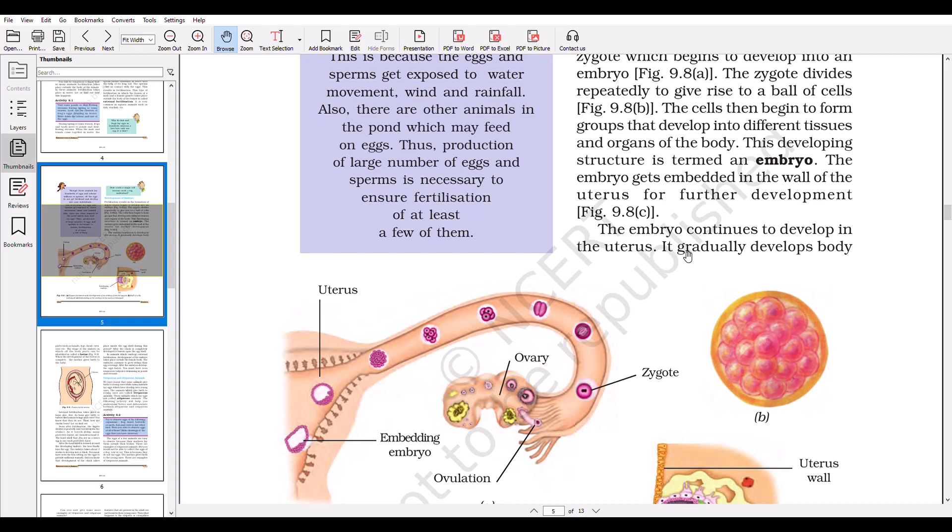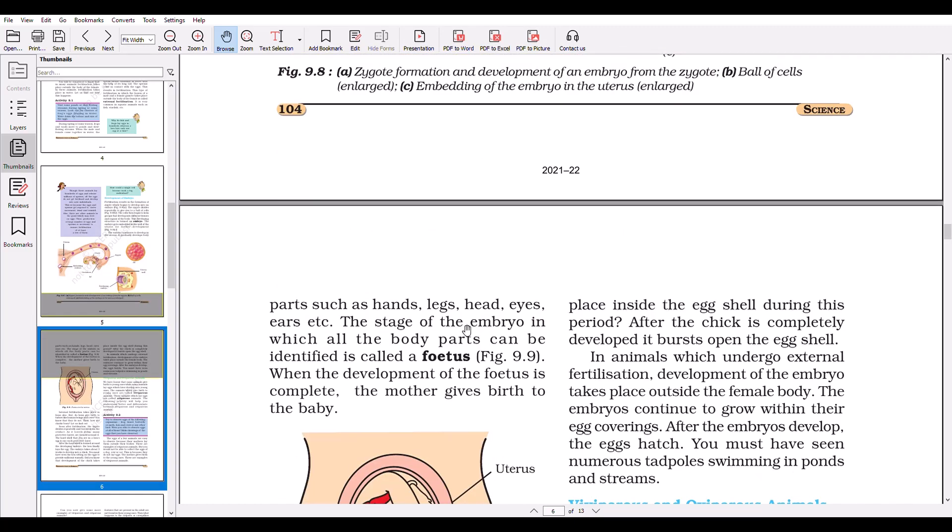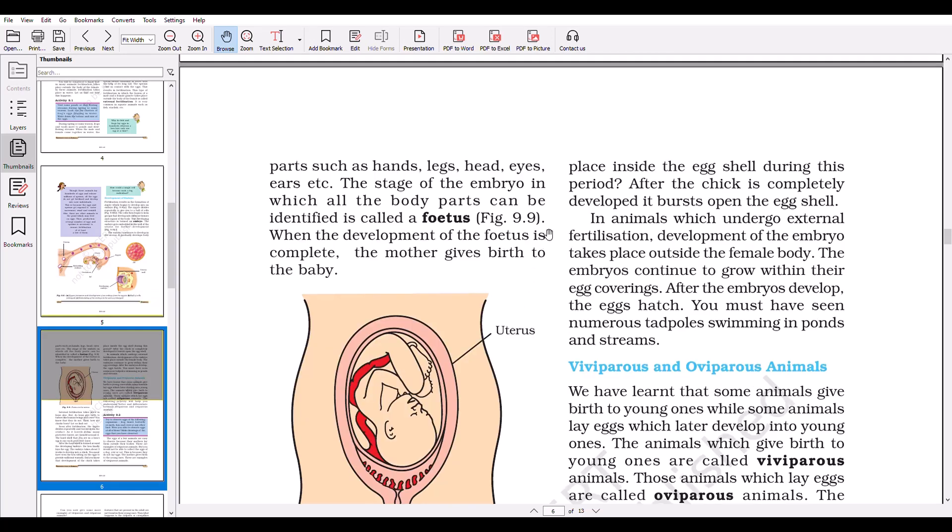The embryo continues to develop in the uterus. It gradually develops body parts such as hands, legs, eyes, and ears. The stage of the embryo in which all of the body parts can be identified is called the fetus. When the development of the fetus is complete, the mother gives birth to the baby.